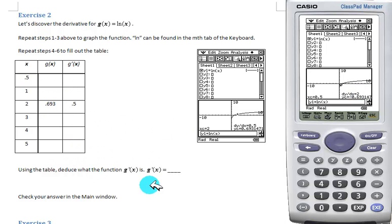Hopefully after filling this out, they can deduce that the derivative of natural log of x is in fact 1 over x.